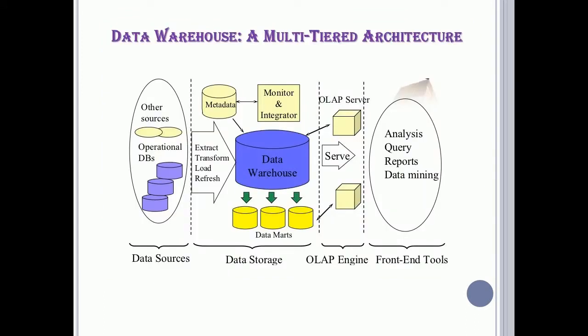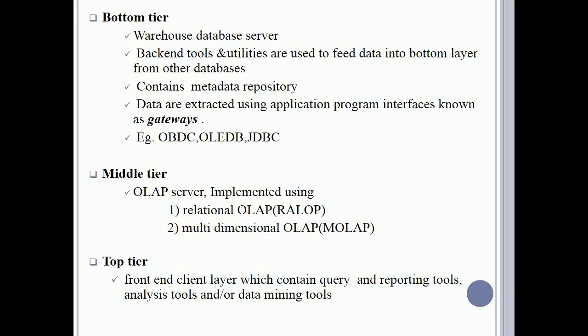A data warehouse uses a multi-tiered architecture. The bottom tier is the warehouse database server; backend tools and utilities feed data into this layer from other databases and it contains a metadata repository. Data is extracted using application program interfaces known as gateways, such as ODBC, OLE DB, and JDBC. The middle tier is an OLAP server, implemented using Relational OLAP or Multi-dimensional OLAP. The top tier is a front-end client layer containing query and reporting tools, analysis tools, and data mining tools.